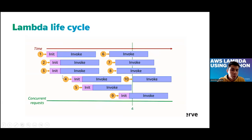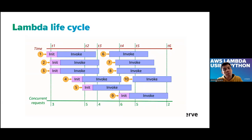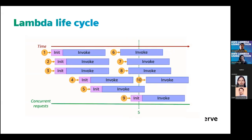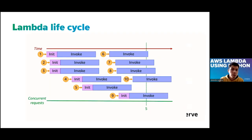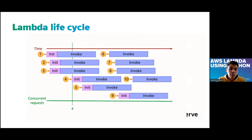If we receive another request, another entity will be created. But if we receive a request and we already have a Lambda created, that Lambda could be responsible for that request. So the life cycle is: we receive an event, the event triggers the Lambda, and at some point AWS will kill your Lambda and shut it down. We can configure the time that the Lambda is awake, and AWS guarantees that all your requests will be responded to.